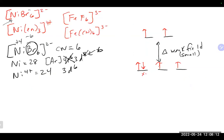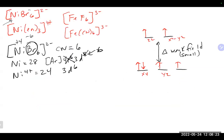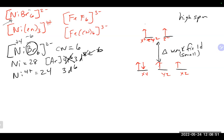The orbital labels are: lower energy set — d(xy), d(yz), d(xz); higher energy set — d(x²-y²), d(z²). With this weak field distribution, we end up with four unpaired electrons, which means this is a high spin situation. The questions you're typically asked are: Is this high spin or low spin? And how many unpaired electrons are there? Here the answers are: high spin, four unpaired electrons.